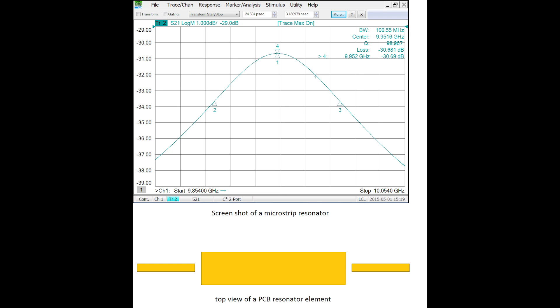Above this is a screenshot from a network analyzer showing a microstrip resonator resonating at about 9.9 gigahertz.